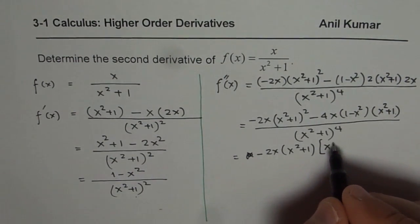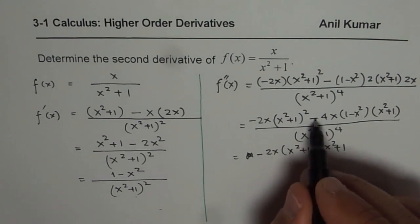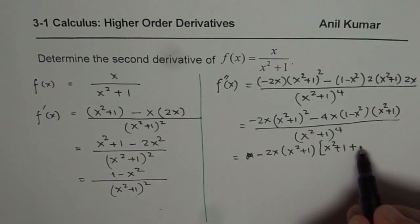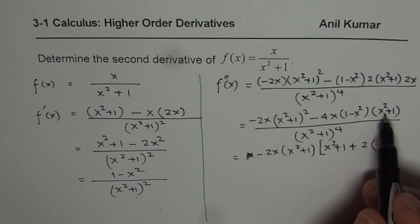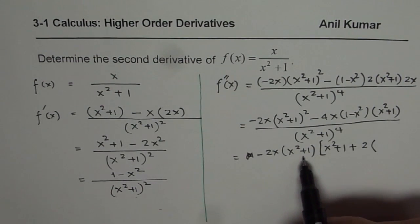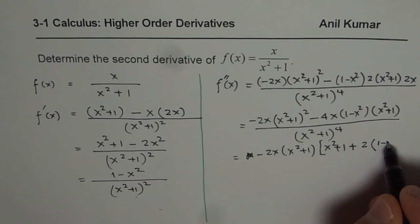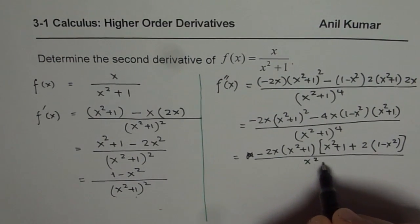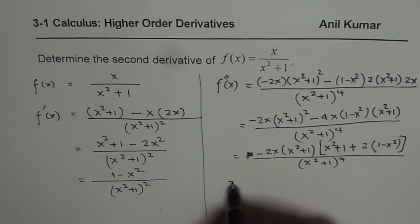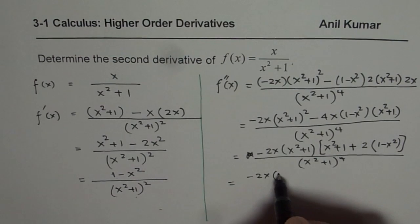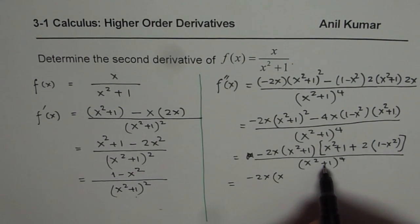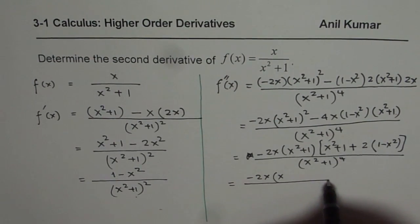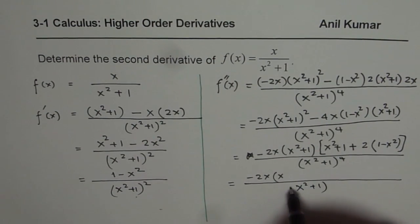After factoring, we are left with (x squared plus 1) from the first term, and the minus and minus becomes plus. We have already taken minus 2, so 2 remains, times (x squared plus 1) — which has been taken as common — times (1 minus x squared), giving 1 minus x squared divided by (x squared plus 1) to the power of 4. We can now simplify: (x squared plus 1) appears twice and one of them cancels out, so the denominator becomes (x squared plus 1) cubed.